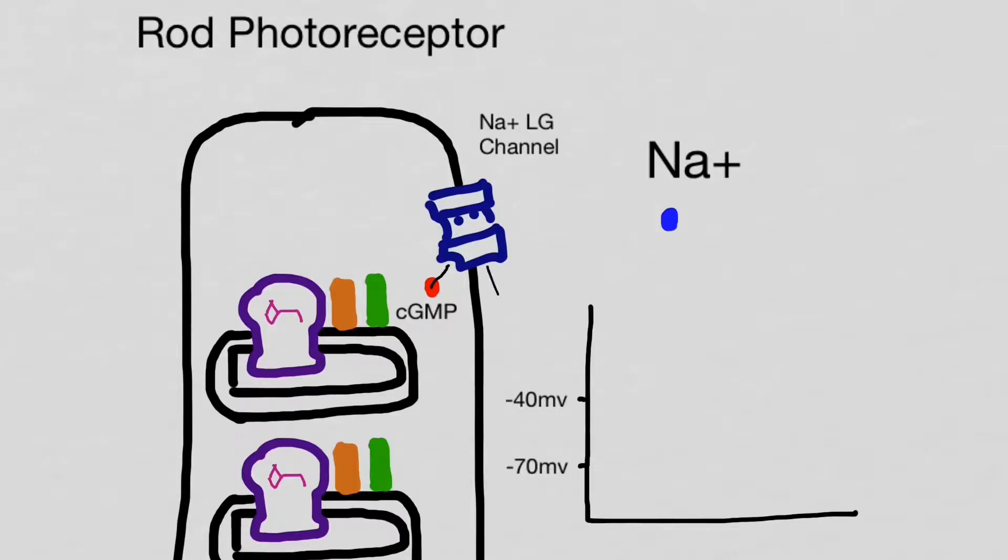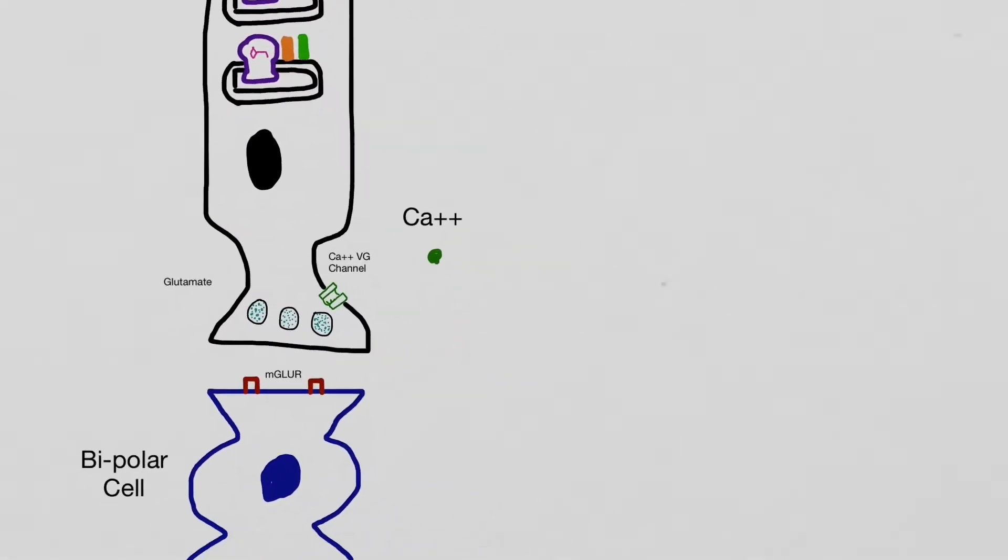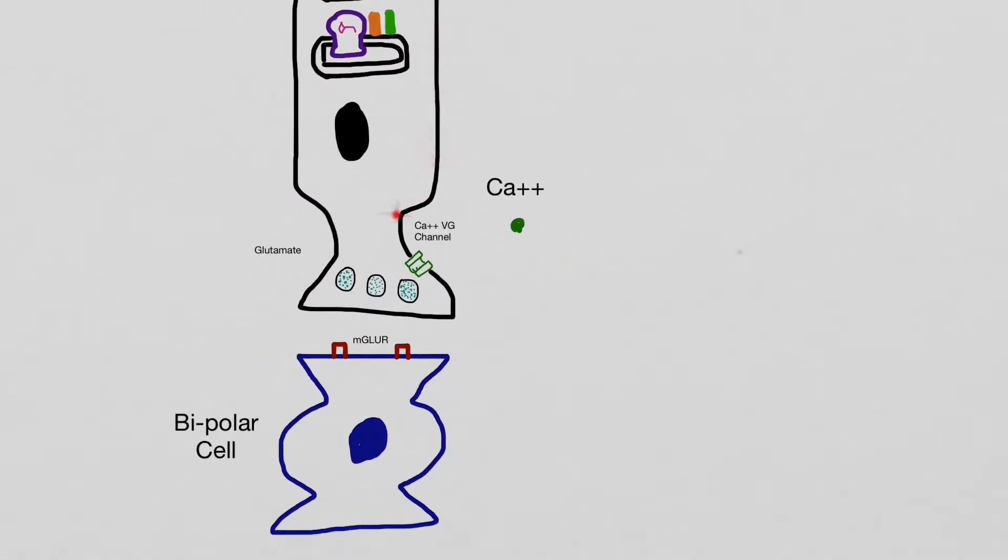When there is no light present, cyclic GMP acts as a ligand and opens up the sodium ligand-gated channel. Sodium will diffuse constantly into the cell, raising the membrane potential from negative 70 to negative 40. This constant diffusion of sodium into the cell is called the dark current.